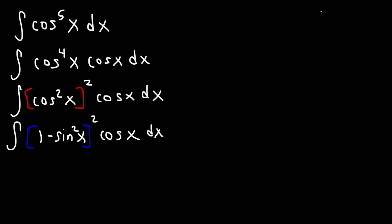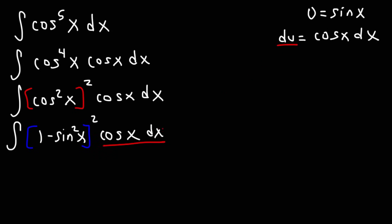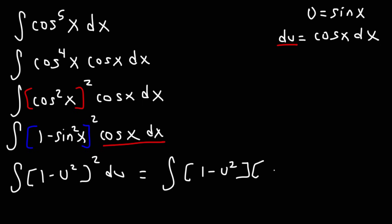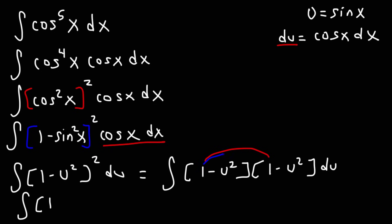Now cosine squared becomes 1 minus sine squared. At this point we can replace sine with u, and du is going to be cosine x dx, which replaces the remaining cosine. This becomes the integral of (1 minus u squared) raised to the second power, du. Before we integrate, we need to expand it by FOILing: 1 minus u squared times 1 minus u squared gives 1 minus 2u squared plus u to the fourth, du.